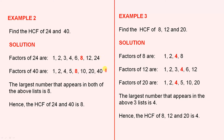The factors of 40 are 1, 2, 4, 5, 8, 10, 20, and 40. The largest number that appears in both of the above lists is 8. Hence, the HCF of 24 and 40 is 8.